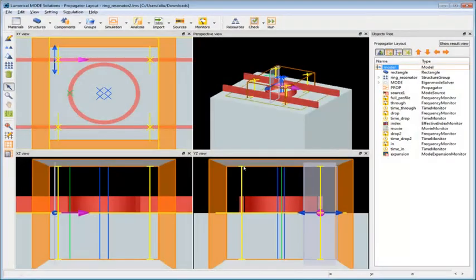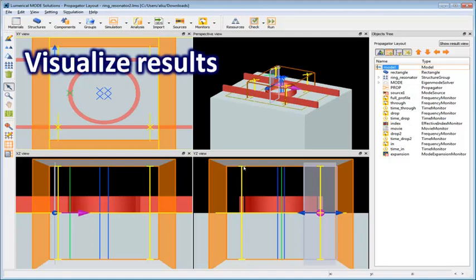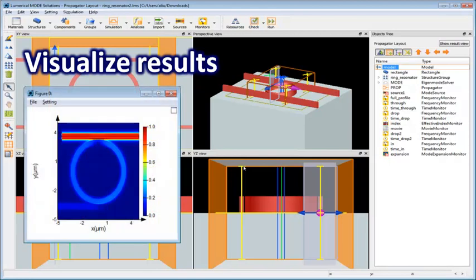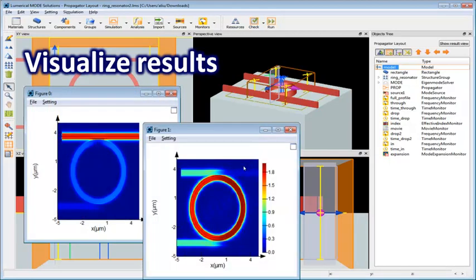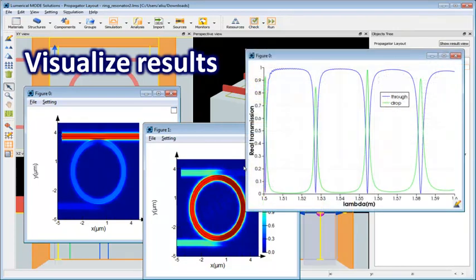Once the simulation is done, the monitors will automatically perform the necessary calculations to return the continuous wave or CW results. For example, we can look at the field profile at different frequencies, as well as the broadband transmission at each of the output ports.